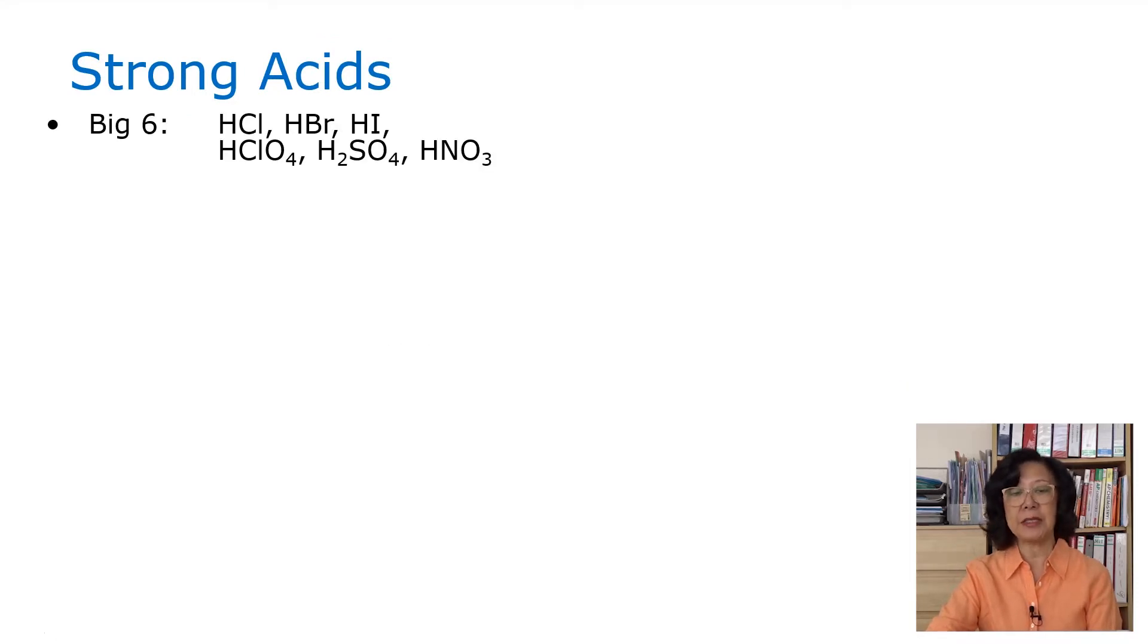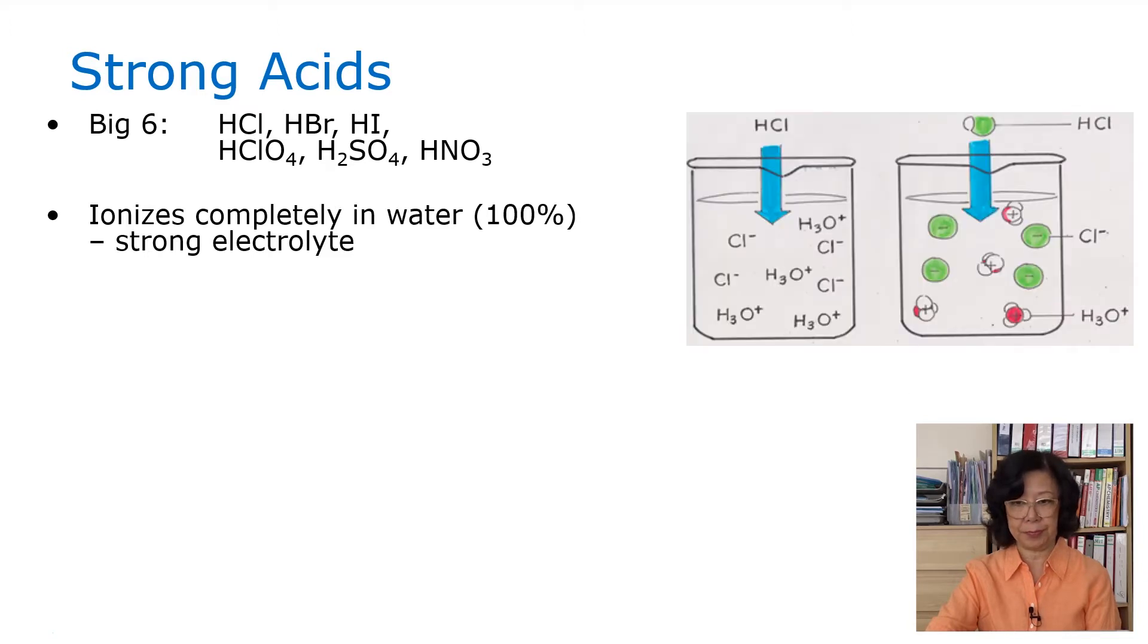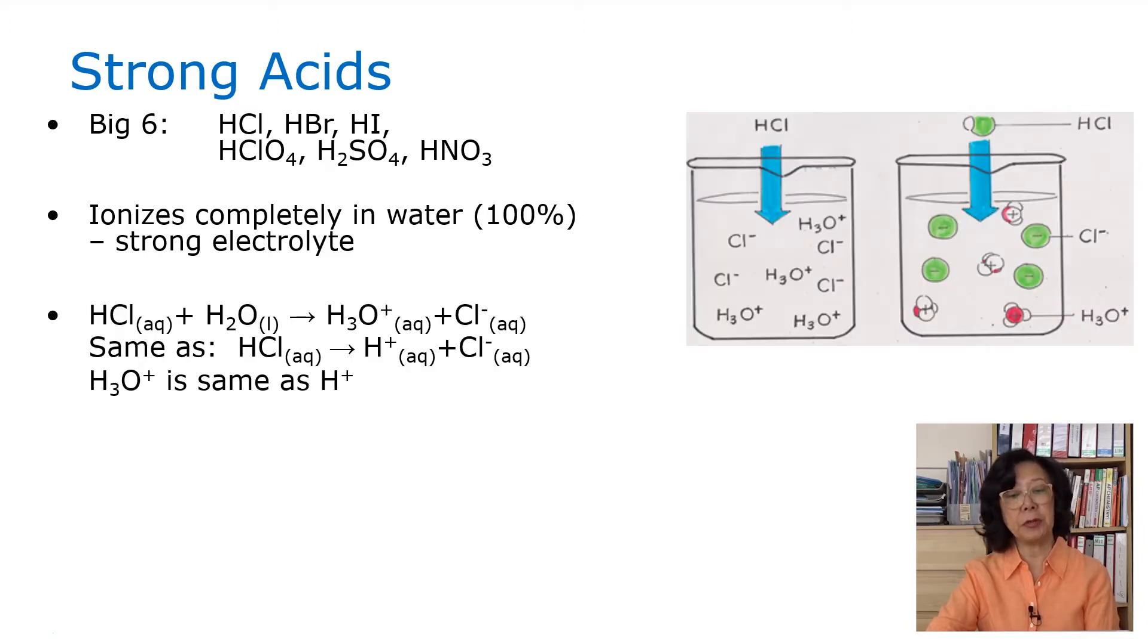There are six strong acids that we need to remember. They are hydrochloric, hydrobromic, hydroiodic, perchloric, sulfuric, and nitric acids. They ionize completely in water and form ions. They are strong electrolytes. When we write the equation, we can put hydrochloric acid reacting with water to form hydronium ion and chloride ion, or we can simplify it as hydrochloric acid ionizes to form hydrogen ion and chloride ion. The hydronium ion can be replaced by the hydrogen ion. They mean the same thing.